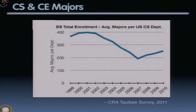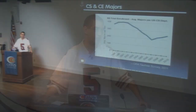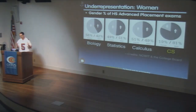Total enrollment per average US CS department hit its nadir around 2006, then turned around because of the 'Facebook effect' — positive press and the sense you could make money in tech. At elite schools like Berkeley, we now have 1,000 students trying to get into our introductory major course, the largest number ever. But we're still not filling demand, and this is only at elite schools.